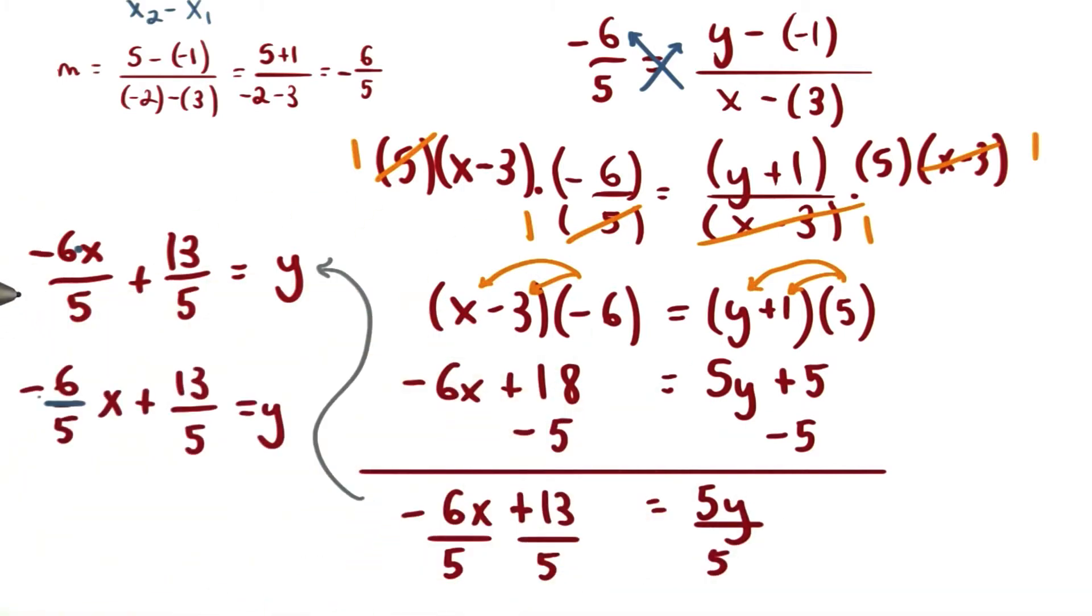I can rewrite this fraction as negative 6 fifths times x. We know multiplication and division have the same priority in the order of operations. I could do multiplication and then the division, or I could do division and then the multiplication. These two are exactly the same.